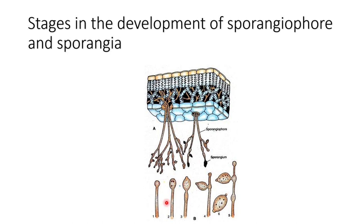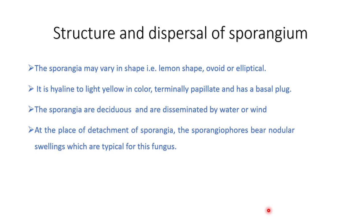The sporangia are lemon-shaped, oval, or elliptical in structure — highly transparent and sometimes light yellow in color. Each sporangium has an apical papilla and a basal plug. The sporangia are deciduous in nature, meaning they fall off at maturity from the sporangiophore and are disseminated by water or wind.